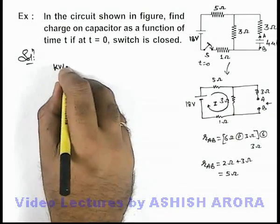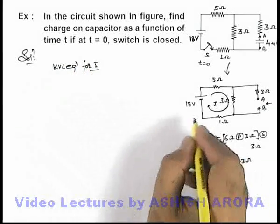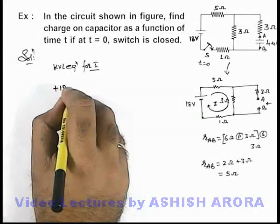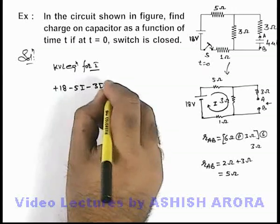If we write KVL equation for i, if we start from this point we can say it'll be plus 18 minus 5i minus 3i minus 3i minus i is equal to zero.